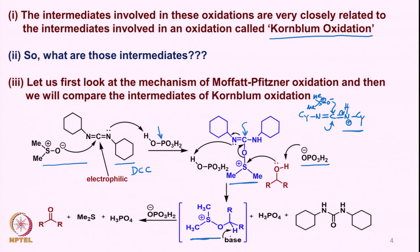This intermediate, as proposed earlier, is acted on by the base present in the reaction medium — the dihydrogen phosphate — which can pick up the proton from here. Then oxidation occurs in this fashion to give the ketone, the dimethyl sulfide goes off, and of course, phosphoric acid is regenerated.